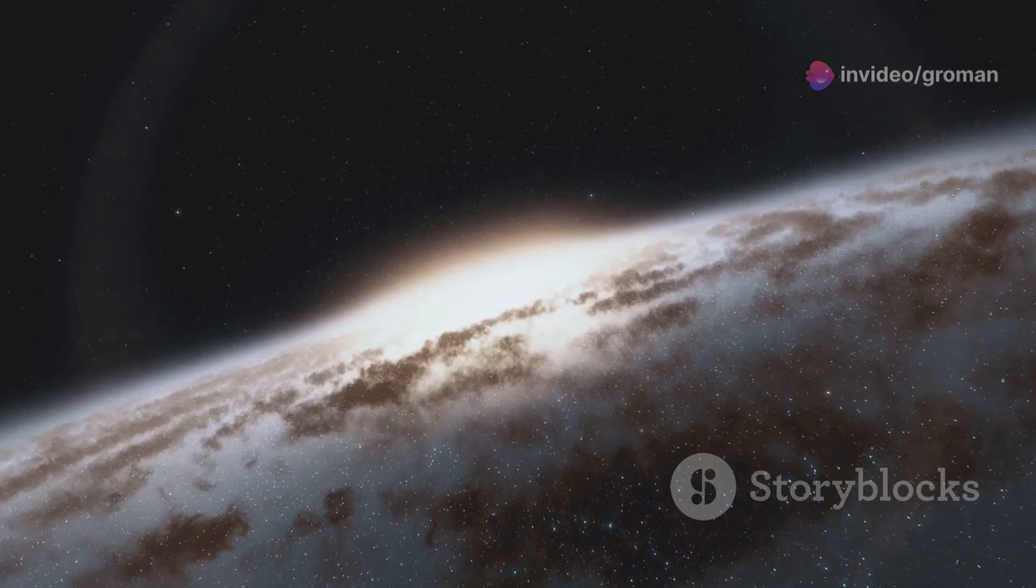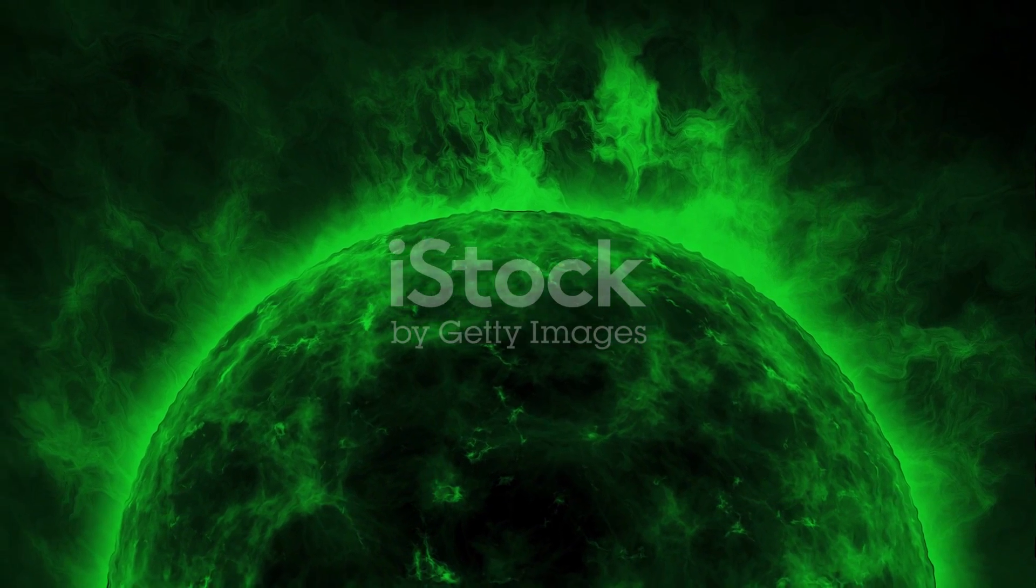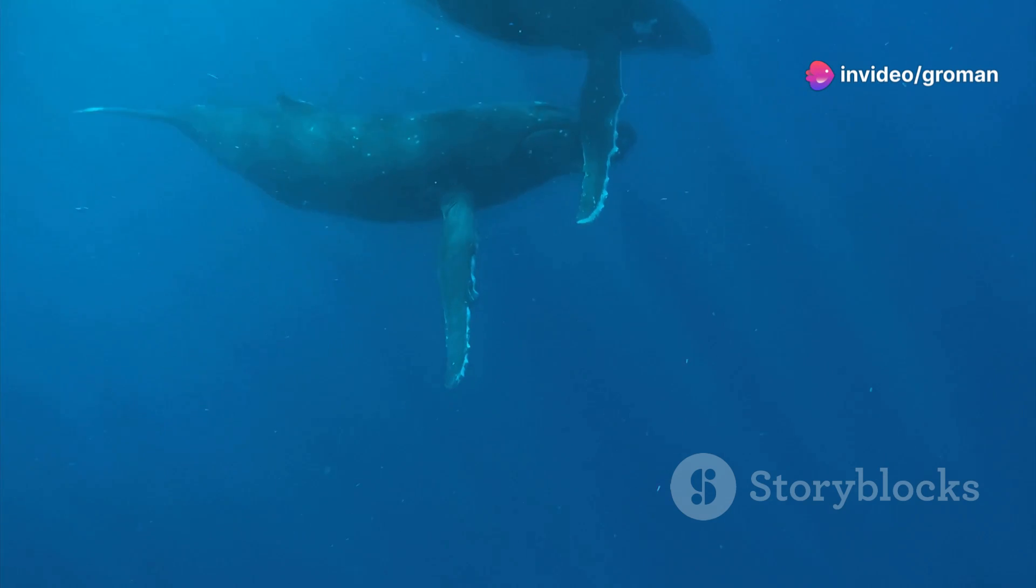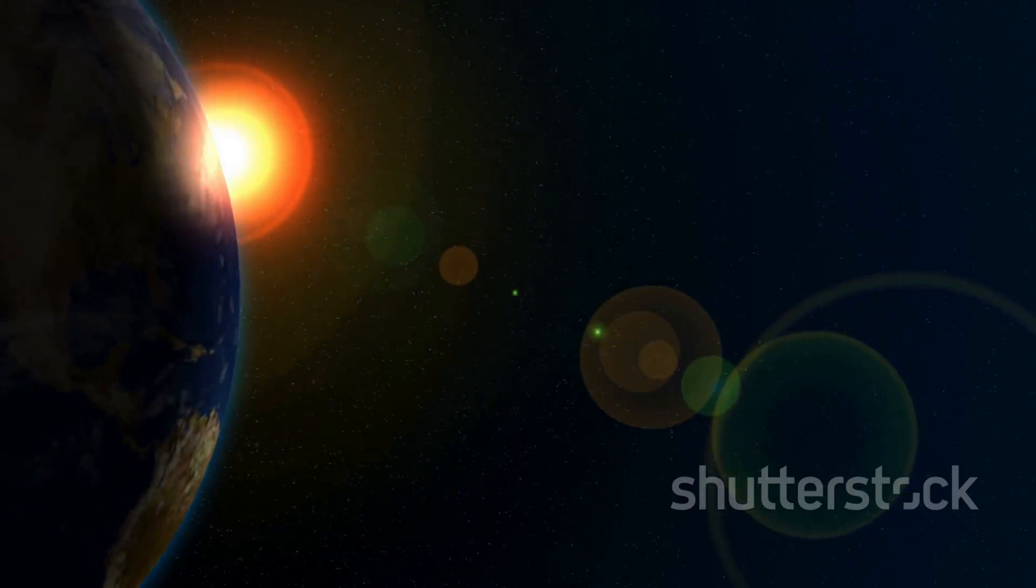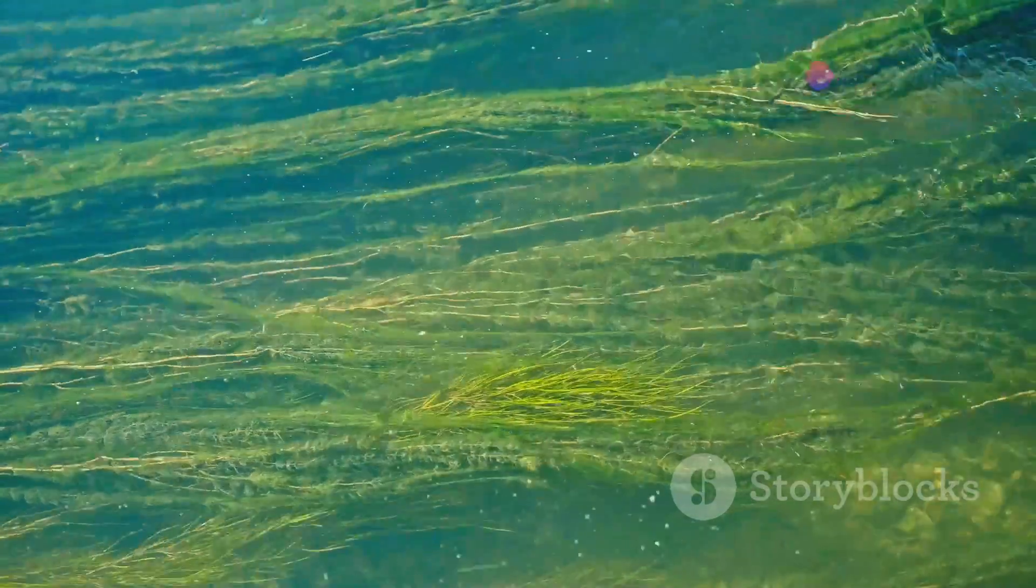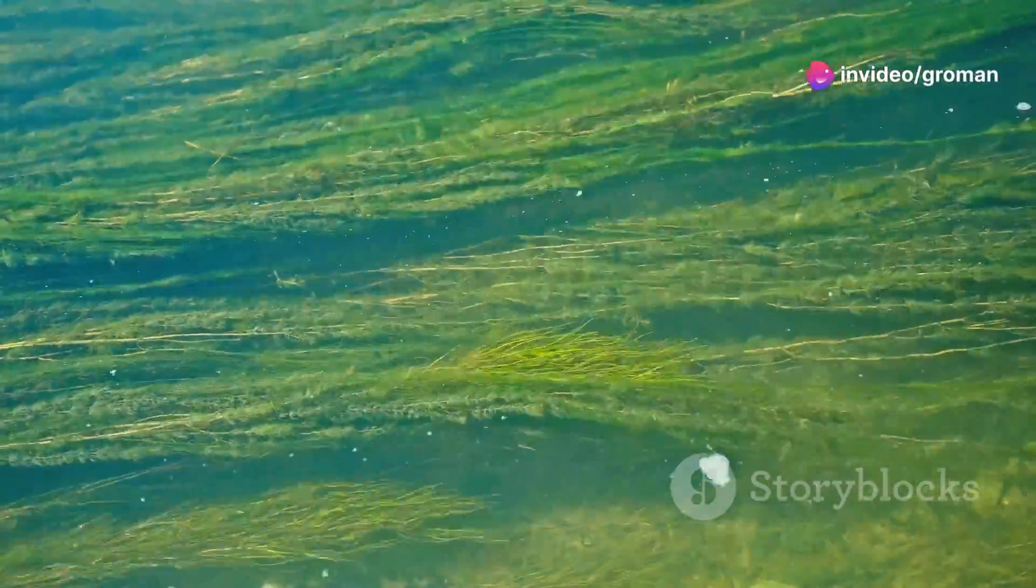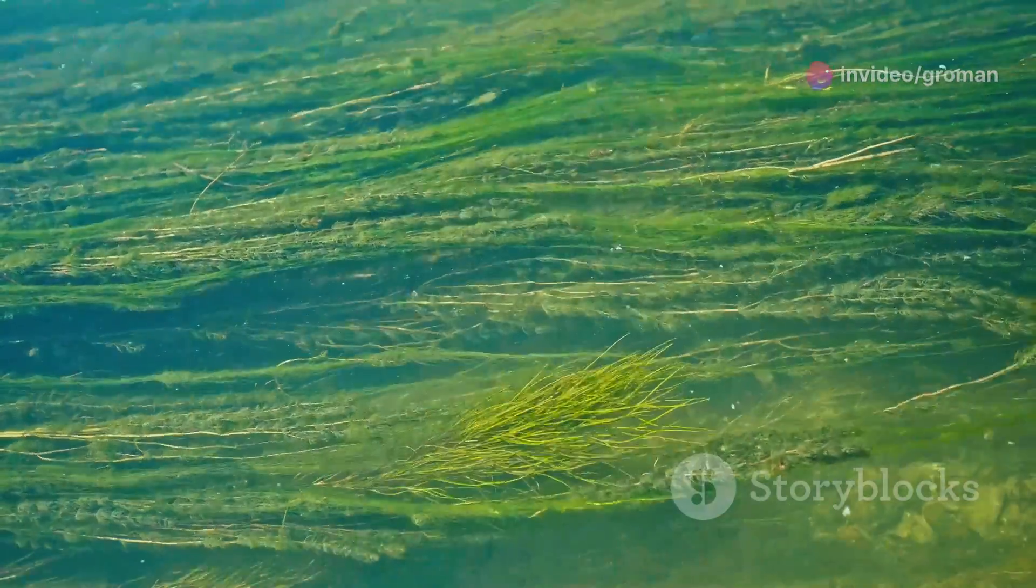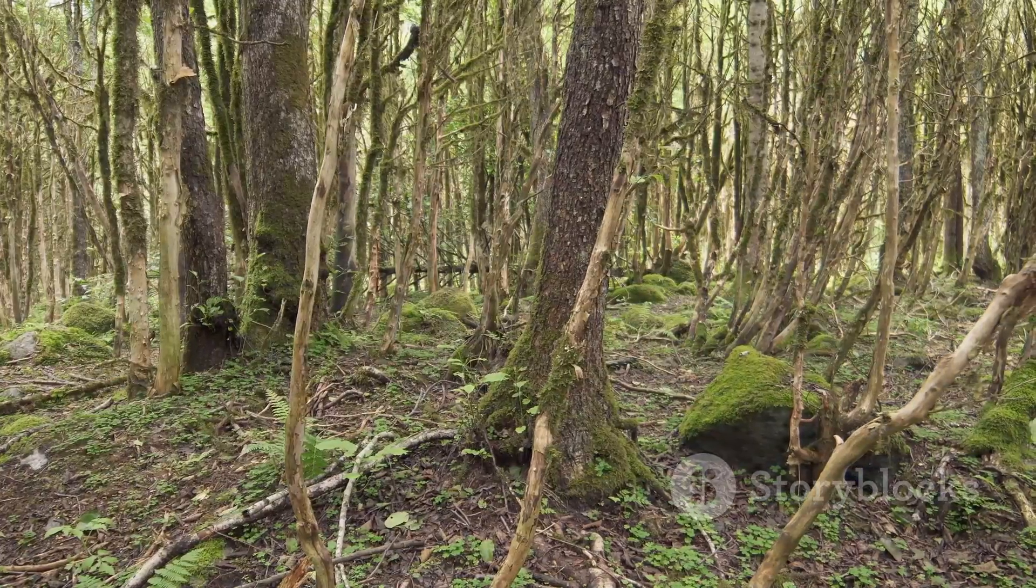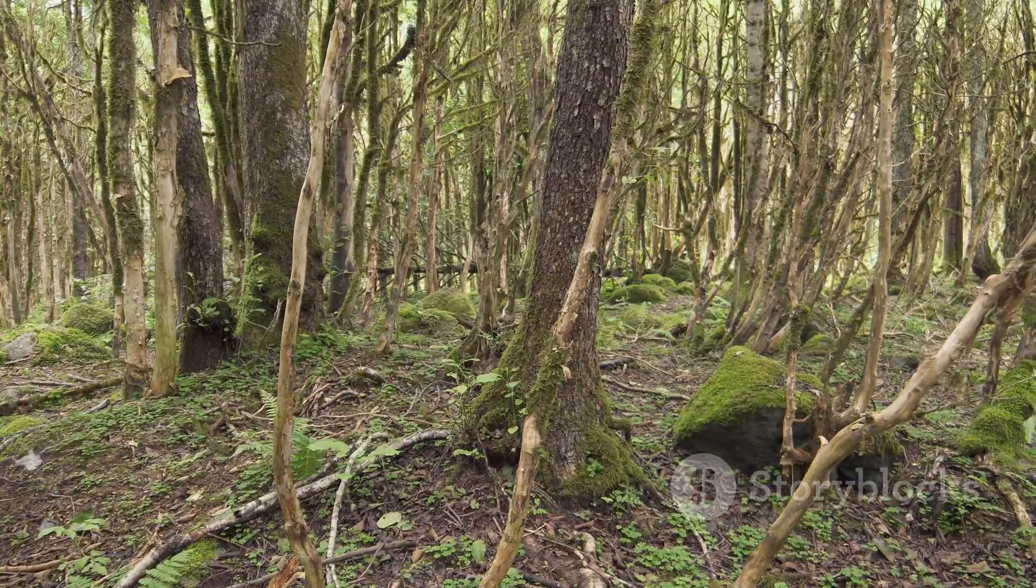Life doesn't just happen, it needs energy. Whether it's from the sun like plants use for photosynthesis, or from chemicals deep in the ocean like strange sea creatures on Earth, every living thing, from the tiniest microbe to the largest whale, needs a constant supply of energy to survive. On Earth, the primary source of energy for life is our sun. Plants, algae, and some bacteria have evolved the remarkable ability to capture sunlight and convert it into chemical energy through photosynthesis, forming the base of the food chain that sustains all other life on Earth.